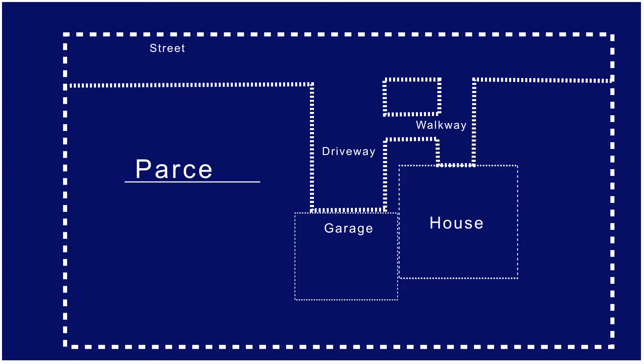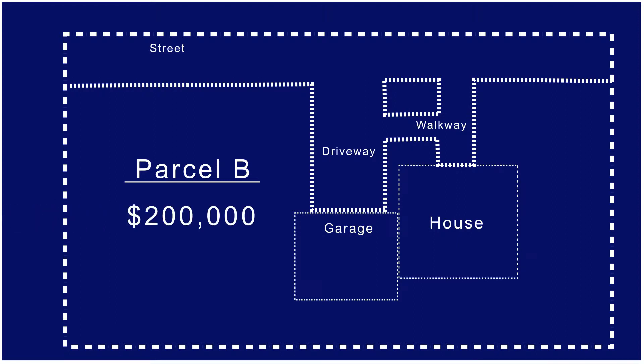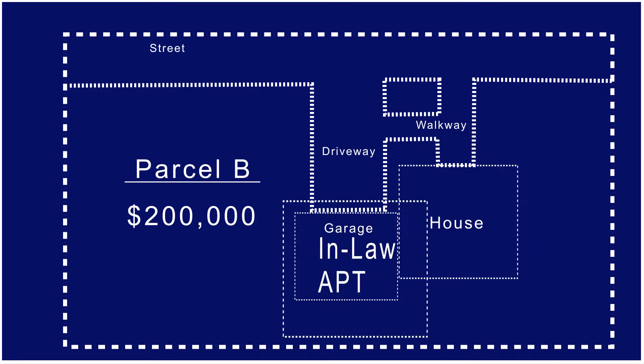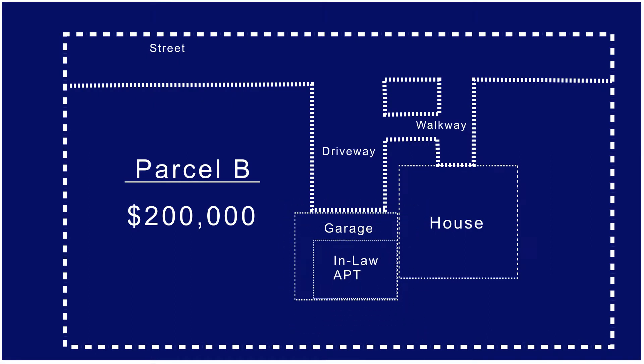The new structure doesn't have to be completed. For example, Parcel B is a single-family home that was assessed for $200,000 last year. An addition was built to the house and this year Parcel B will be assessed for $225,000 — an increase of $25,000. That $25,000 in added value due to the construction activity is also included in the calculation of the community's new growth factor.